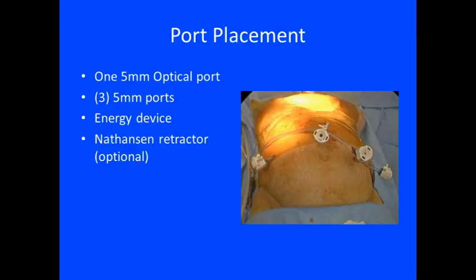Access was initially obtained by using a 5-millimeter optical port in the supraumbilical position, followed by three additional 5-millimeter ports under direct visualization. A Nathanson retractor was subsequently used for liver and greater curvature retraction.